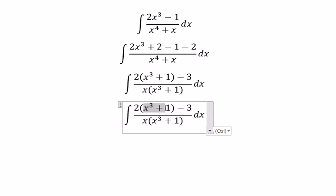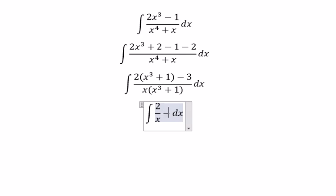x to the power of 3 plus 1 divided to this one, you will got about 2 over x and we have negative number 3 over x multiply with x to the power of 3 plus 1.